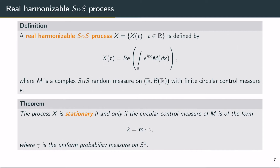The process is stationary if and only if the circular control measure decomposes into a product of the measure M and the measure gamma, which is the uniform probability measure on the unit circle S1. So the stochastic process X is characterized by the respective symmetric alpha stable random measure M, which in turn is characterized by its circular control measure k. In the special case that X is stationary, k can be written as M times gamma, and our goal is to characterize the control measure M.